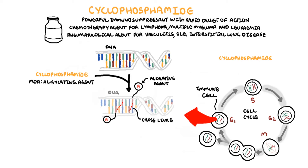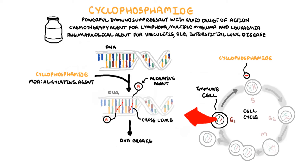Cyclophosphamide causes the cell to arrest at the G1 phase, preventing the S phase from occurring. The cell will then enter apoptosis — programmed cell death. This causes a decrease in the number of dividing cells, such as immune cells, but also cancer cells, because cancer cells are rapidly dividing.